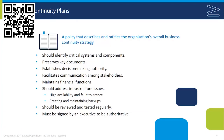The business continuity plan and all of its elements should be reviewed and tested regularly so that we can validate those processes and procedures and identify anywhere changes may be necessary. They should also be signed by an executive in order to be considered authoritative.